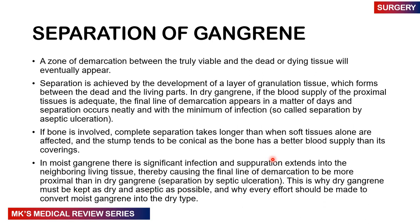In moist gangrene, there is significant infection and suppuration extending into normal tissues, causing the final line of demarcation to be much more proximal than in dry gangrene — this is called separation by septic ulceration. That's why dry gangrene must be kept dry and aseptic. Every effort should be made to convert moist gangrene to the dry type so it can demarcate properly and the part can be amputated cleanly.